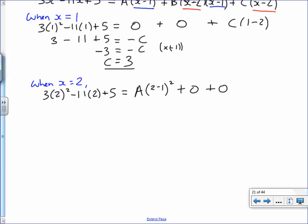So I can simplify the equation in this way. 3 times 2 squared is 3 times 4, which is 12, minus 22 plus 5, and we've got 2 minus 1 squared is 1, so that's going to be A straight away. 12 subtract 22 is negative 10, add 5 is negative 5. No further calculation required.